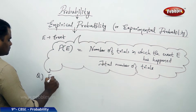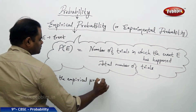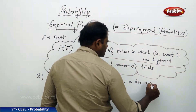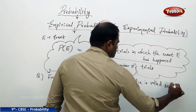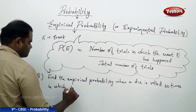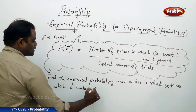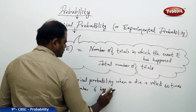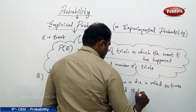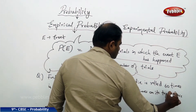So let's find the empirical probability when a die is rolled 60 times, in which a number 6 has obtained 15 times on its top surface.